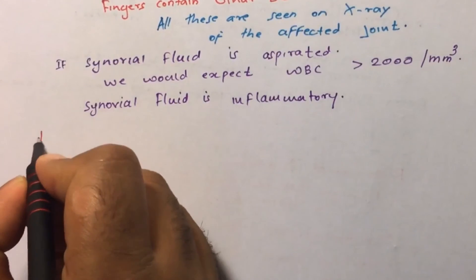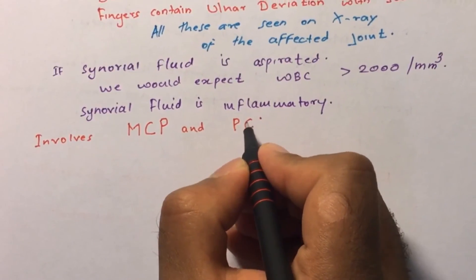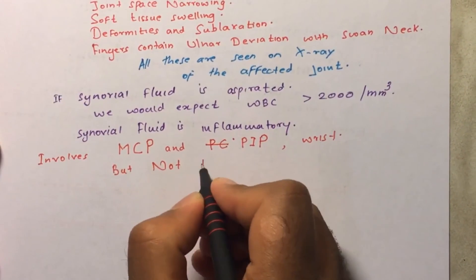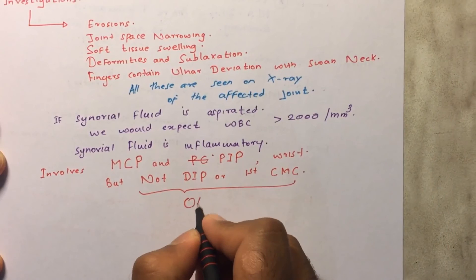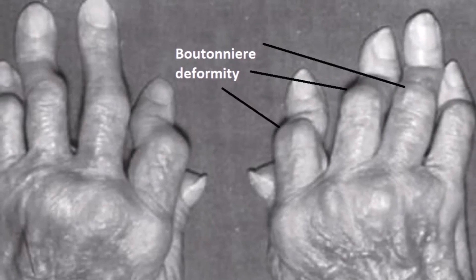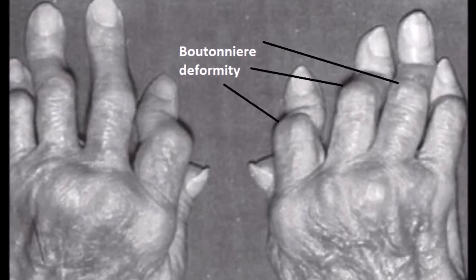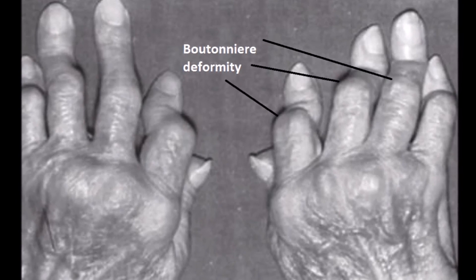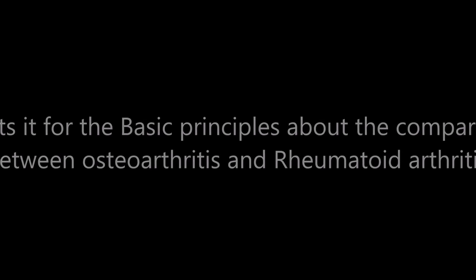Rheumatoid arthritis involvement is limited to the proximal interphalangeal joint and metacarpophalangeal joint — not the DIP or first carpometacarpal joint. The famous boutonniere deformity shows hyperflexion of the proximal interphalangeal joint and hyperextension of the distal interphalangeal joint, which is very classical in rheumatoid arthritis. That covers the basic principles comparing osteoarthritis and rheumatoid arthritis.